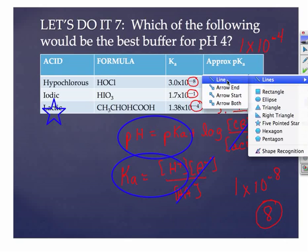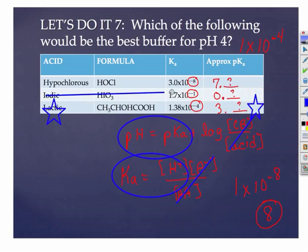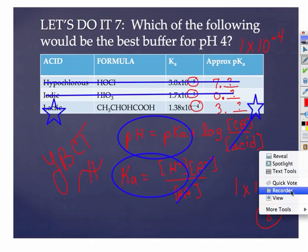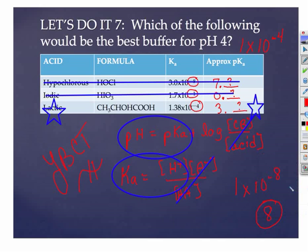So either way, the lactic acid wins as the best choice for this buffer. And so we would devise a method to get roughly equal amounts of lactic acid and its conjugate base. And we're going to take a look at the mathematical portions of that in our next video. So until then, this is signing off.